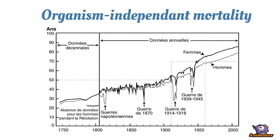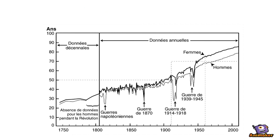So, animals just don't have the time to get old in nature. We can suppose that if an individual would age fast, but had another evolutive advantage, then its genes would be selected during evolution. According to the theory of antagonistic pleiotropy, such mutations could explain aging.